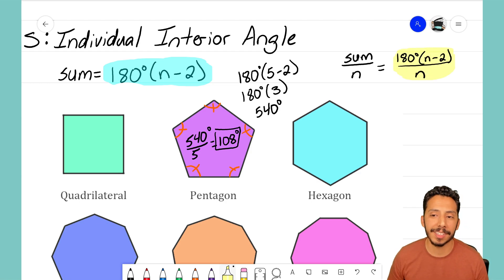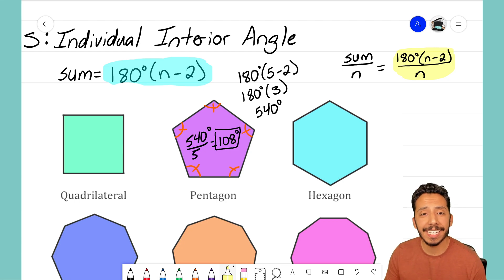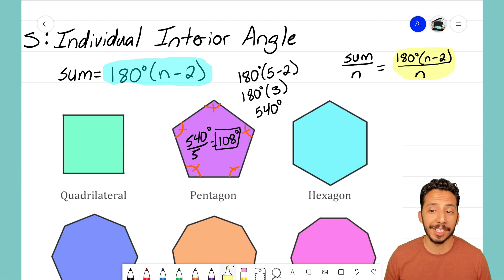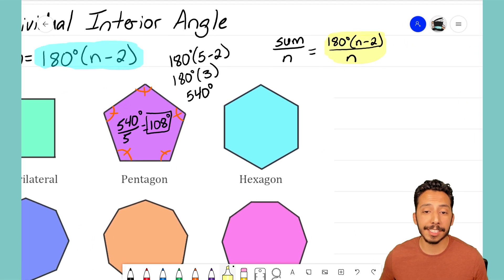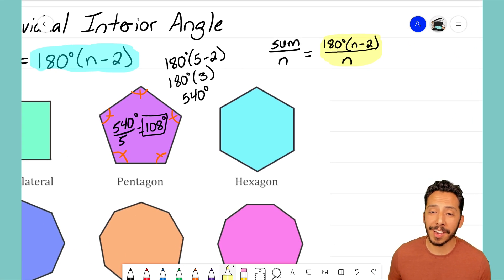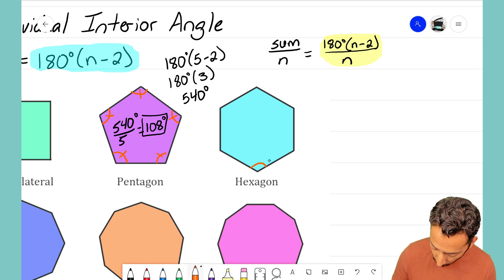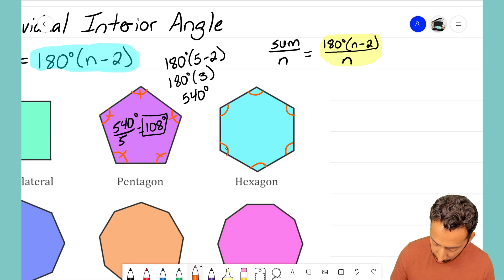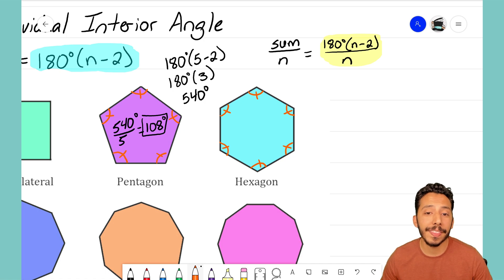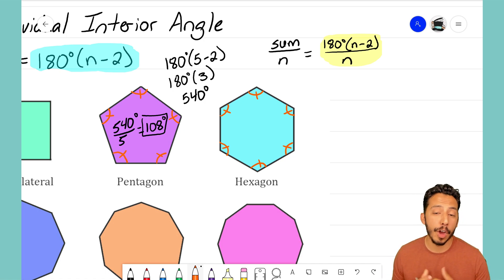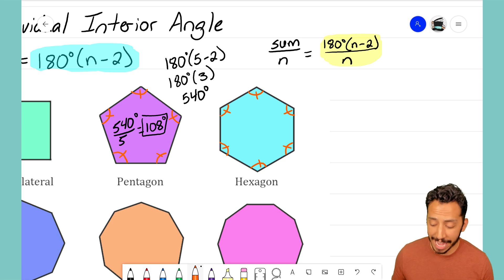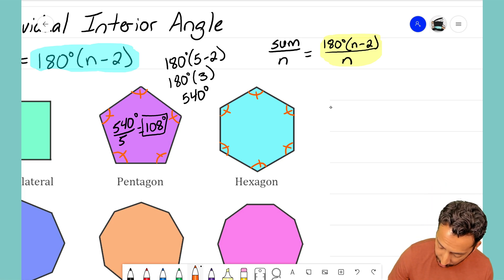We have a formula for the sum: 180 degrees times (n minus 2), all divided by n. This formula is going to be the formula for you to find any individual interior angle for a regular polygon. Let's go ahead and use it on the hexagon. I know that all of those angles inside are equal because this is a regular hexagon, so I can use that formula to determine what the individual interior angle is.